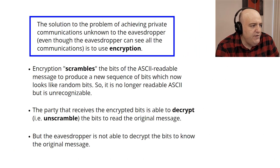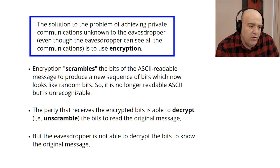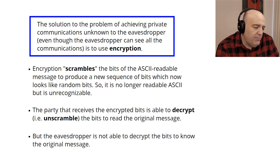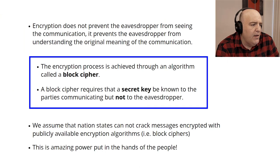The solution to achieving private communications is through encryption. Even though the eavesdropper can see all communications, when they're encrypted, the bits have been scrambled. The eavesdropper still sees the bits being sent, but after encryption they're unreadable — no longer readable ASCII text. The party on the other end, who receives these encrypted bits, knows how to decrypt them, unscrambling the bits to read the original message. But the eavesdropper, even though he receives the encrypted ciphertext, is not able to know the original message. The encryption doesn't prevent the eavesdropper from seeing the communication — it only prevents him from understanding its original meaning.